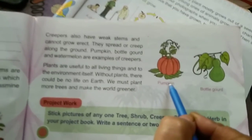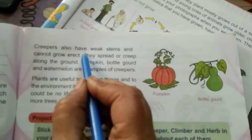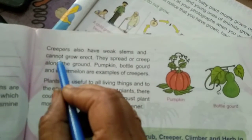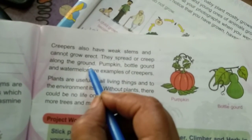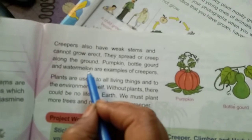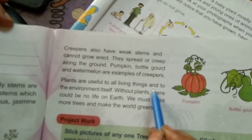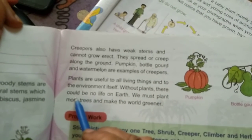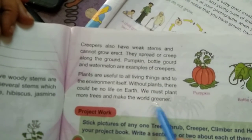Now creepers. This is pumpkin, bottle gourd — it creeps over the ground. Creepers also have weak stems and cannot grow erect; they spread and creep along the ground. Pumpkin, bottle gourd, and watermelon are examples of creepers. Plants are useful to all living things and the environment. Without plants there could be no life on earth. We must plant more trees and make the world greener.